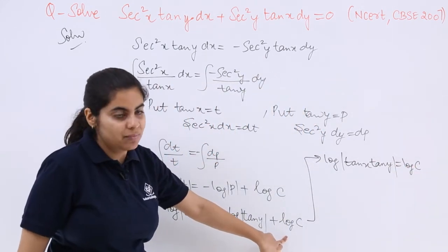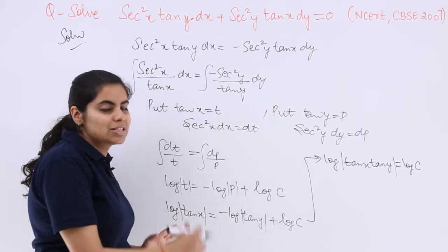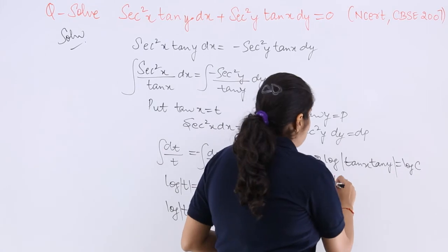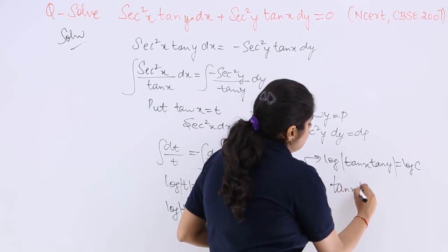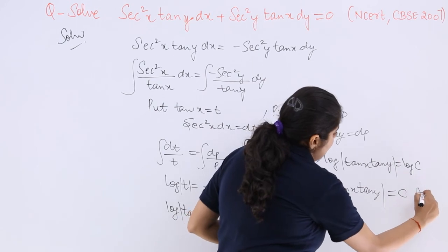Where is this? Log c. Again, I am repeating what I did. This minus sign goes to the other side, becomes plus. Log m + log n = log mn. Log log just gets removed. So it is tan x tan y = c and that is the answer.